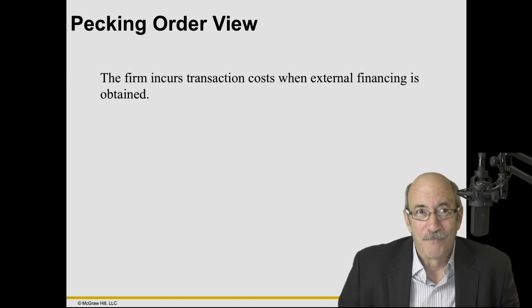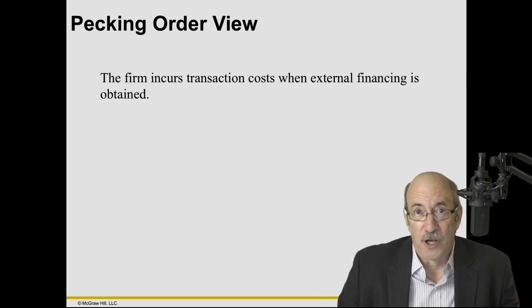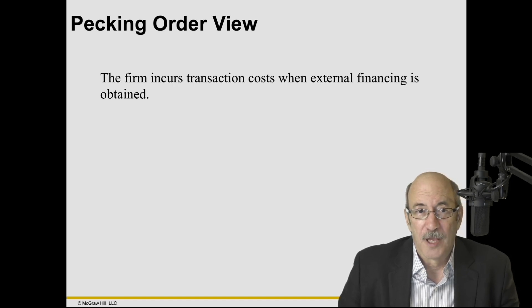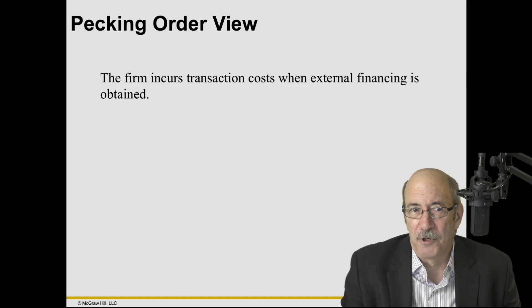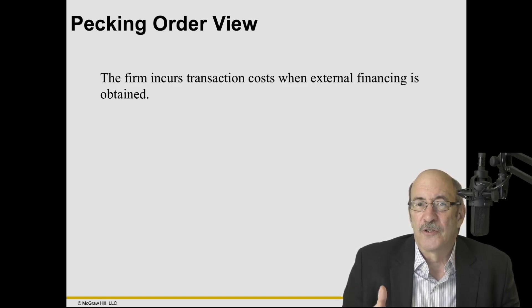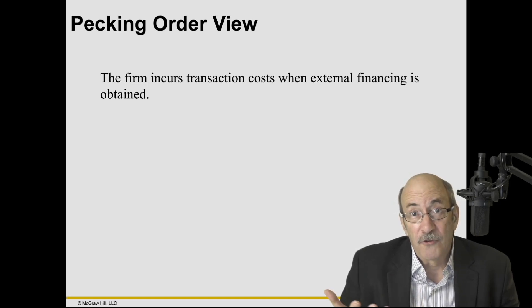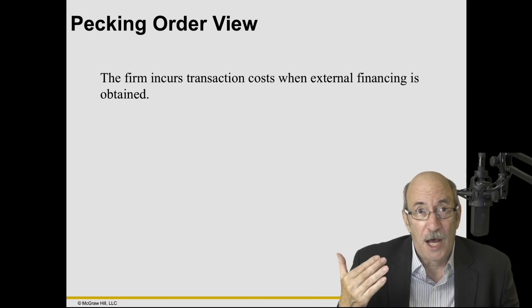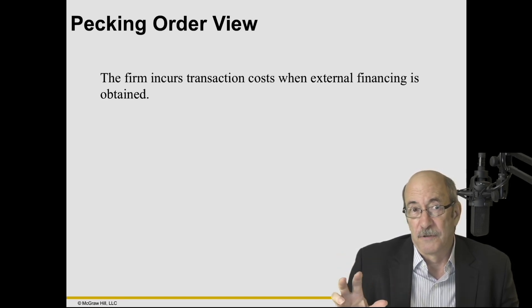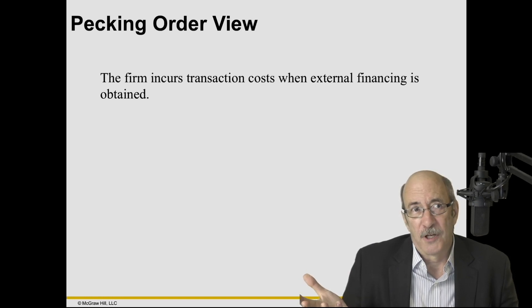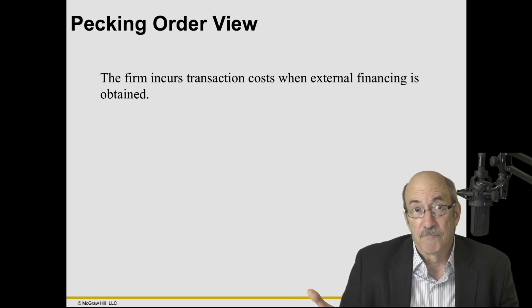Pecking order is yet another aspect to consider. Myers and Maslow brought this to light and are cited as the inventors of the pecking order theory of capital structure, which relates back to the signaling aspect. The firm incurs transaction costs when external financing is used — flotation costs — which are often quite high and fixed, meaning small projects face very high percentage flotation costs. So rather than use external financing, why not fund it with internally generated funding from retained earnings? As long as it's in cash, the firm can do that. The pecking order says: use the cheapest method.